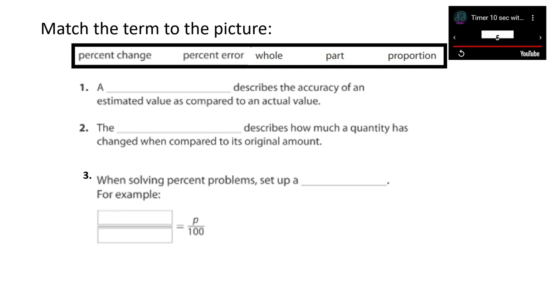Here we have basically the definition of percent error for the first one. A percent error describes the accuracy of an estimated value as compared to an actual value. We'll take a look at percent error later on in this video. The next one, the percent change, describes how much a quantity has changed when compared to its original amount. So, we think of examples such as markdowns, percent change could be markups, like a sales tax. And again, we will visit this at the end of the video. And when solving percent problems, set up a proportion. For example, part over whole equals P over 100. And that would be your percent.